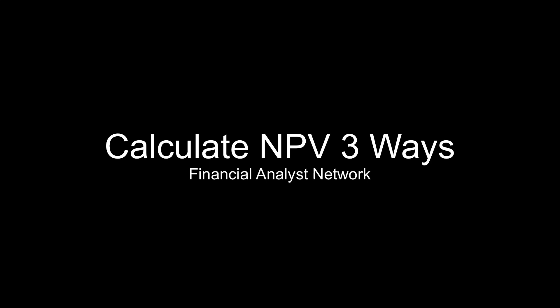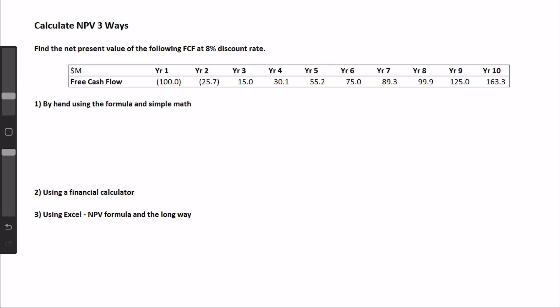Today we'll look at how to calculate the net present value, or NPV, three ways. This is part of the CFA Level 1 series, but it can come in handy for anyone even if you're not studying for the CFA. The three ways we're going to calculate the NPV are: one, using the formula by hand and simple math; two, using a financial calculator; and three, using Excel, using the NPV formula or calculating it the long way.